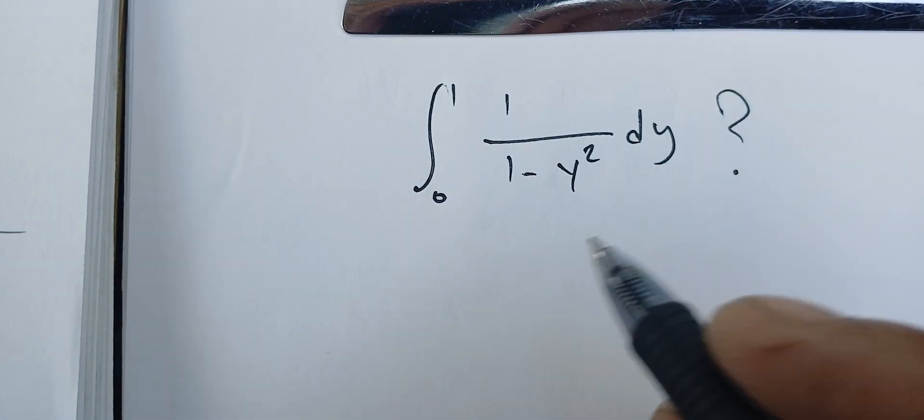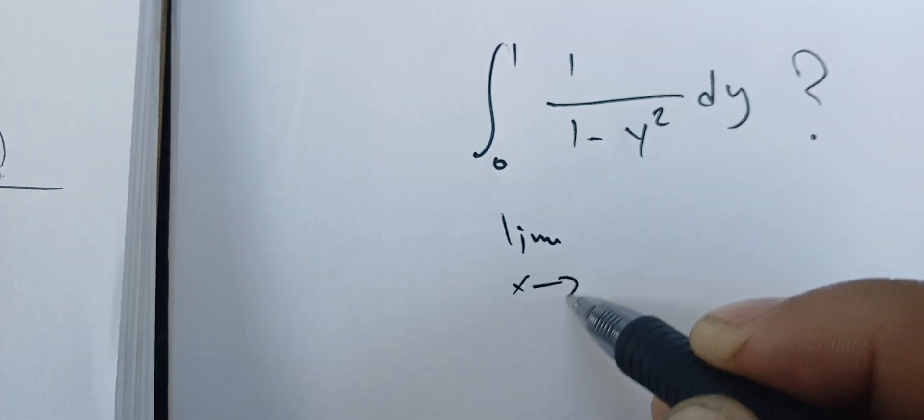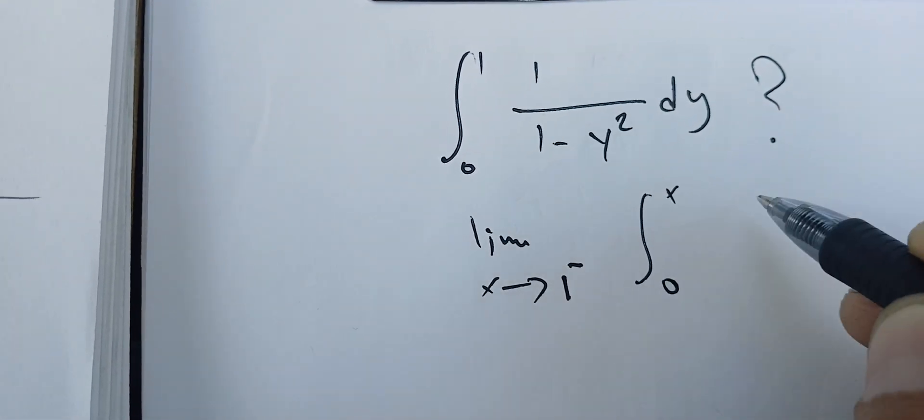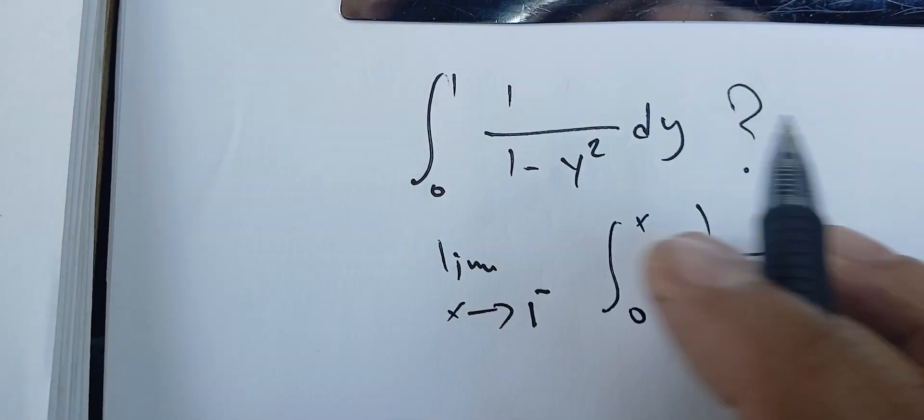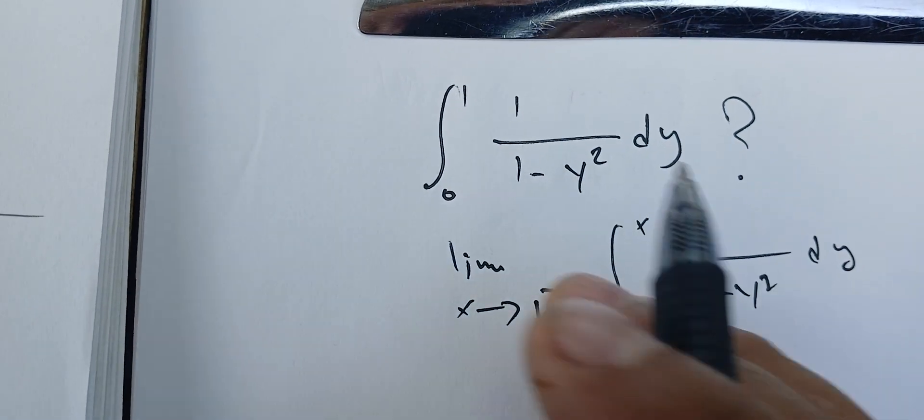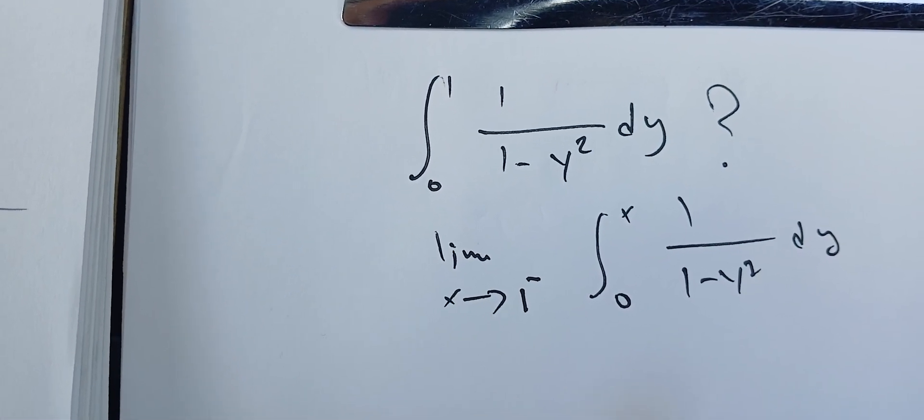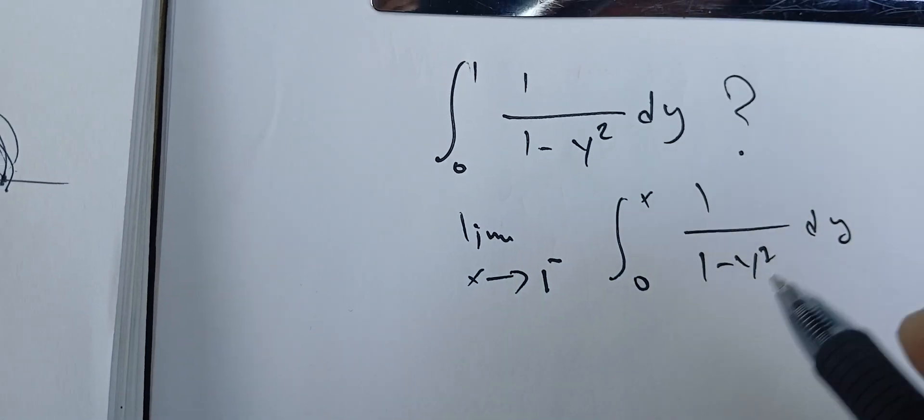In this case, what we need to do is compute the limit as x goes to 1 from the left of the integral from 0 to x of 1 over 1 minus y squared dy. If this limit exists, then our integral is finite and it's convergent, otherwise it doesn't exist.